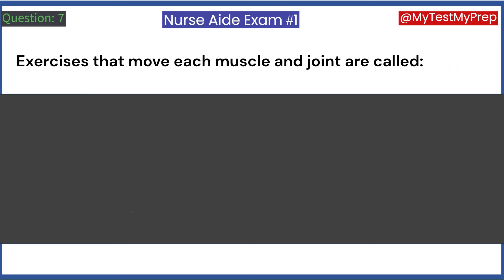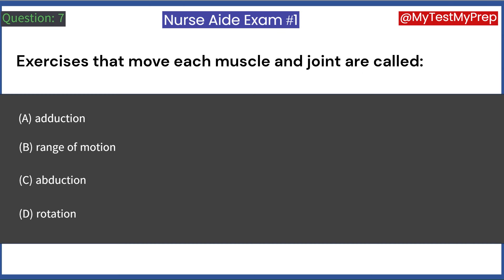Exercises that move each muscle and joint are called: A. Adduction. B. Range of motion. C. Abduction. D. Rotation. Answer: B. Range of motion.